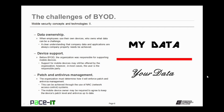What are some of those challenges? The first one is data ownership. When an employee uses their own device, who owns what data can be a challenge. A clear understanding that company data and applications are always company property needs to be achieved. Then there is device support. Before BYOD, the organization was responsible for supporting mobile devices. Support may still be offered, however in most cases the user is the responsible party. This is especially true with smartphones because there are so many different versions of operating systems, and IT really doesn't want to have to support all of them.